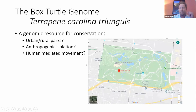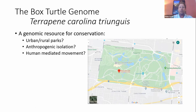The Institute of Conservation Medicine at the St. Louis Zoo were the ones responsible for creating this box turtle genome reference. They really wanted to make this genomic resource a tool for conservation. They had some local questions they're really interested in thinking about — for example, can we understand how urbanization around a park is affecting the genetic diversity of turtles within those parks? Thinking about things like how anthropogenic isolation — for example, roadways — is influencing or impacting gene flow across the landscape.